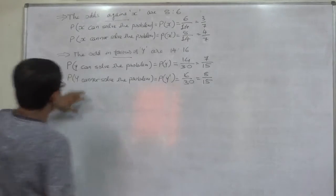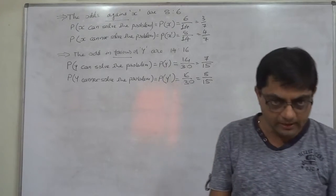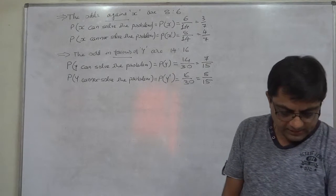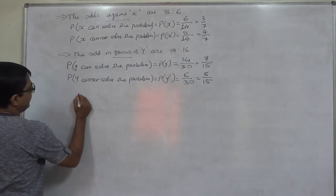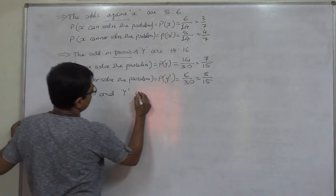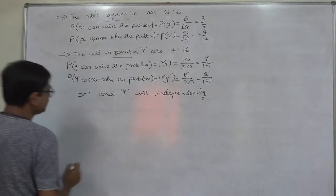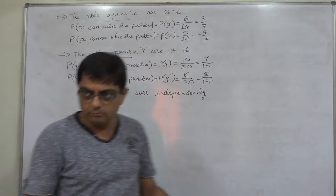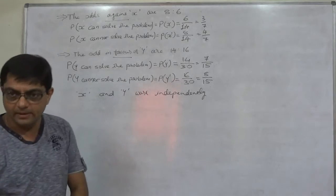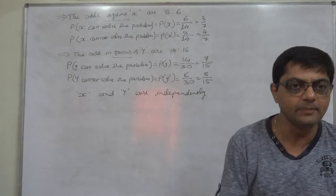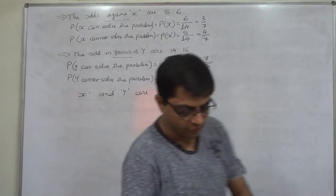The problem involves two different persons X and Y, and question two states 'both working independently of each other,' so X and Y work independently. This means events X and Y are independent, and therefore X complement and Y complement are also independent. For any two independent events, the probability of their intersection equals the product of their respective probabilities.